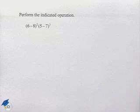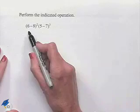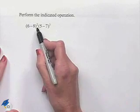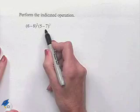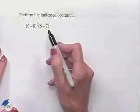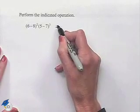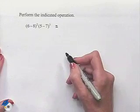Here's another problem dealing with order of operations. Perform the indicated operation: (6-8)² and (5-7)³. By order of operations, we know we're going to perform the operations given inside the parentheses first.